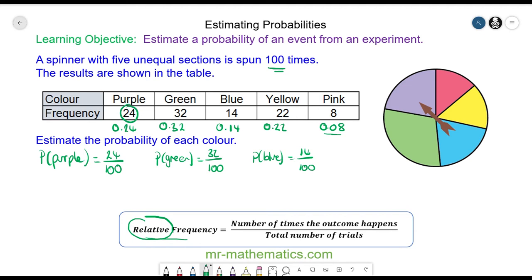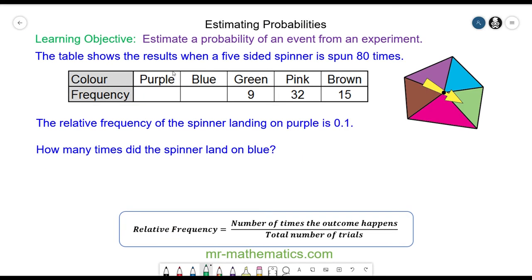Let's move on to a different question. The table shows the results when a five-sided spinner is spun 80 times. Nine of the outcomes were green, 32 of the outcomes were pink, and 15 of the outcomes were brown.